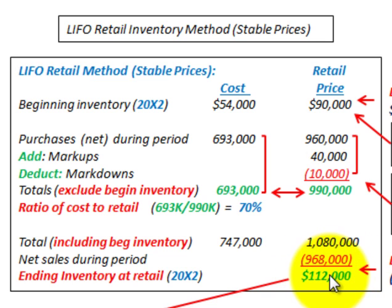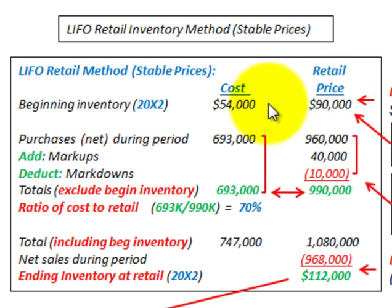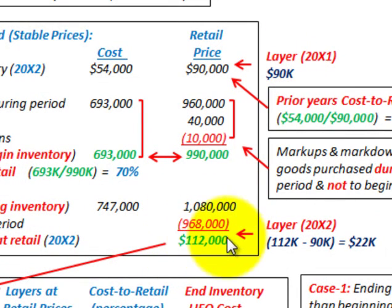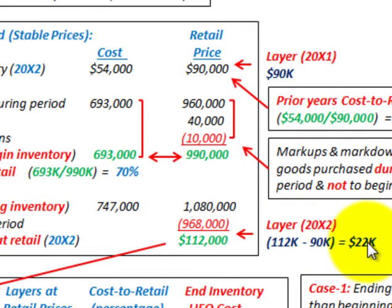You can see the $112,000 ending inventory is greater than the beginning inventory of $90,000. When we use this LIFO inventory method, we set up inventory layers. Our beginning inventory carries over as one layer at $90,000. Because ending inventory was greater than beginning inventory, we establish another layer for the difference: $112,000 less $90,000 gives us a new 20x2 layer of $22,000.